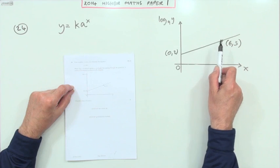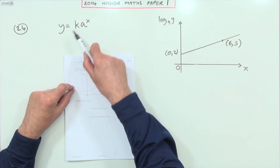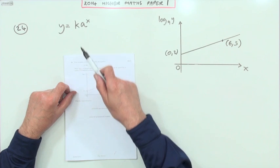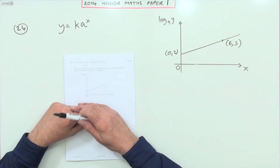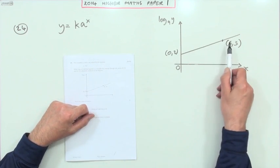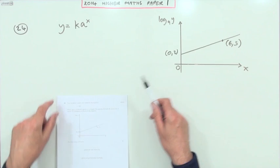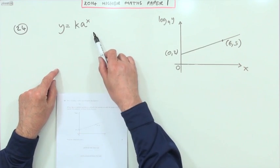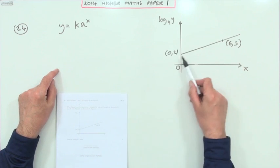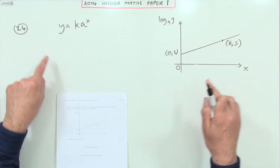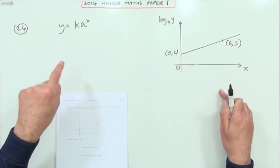Given these two points you could simply substitute those into that, get a pair of simultaneous equations and solve them. But the fact that there's a graph here suggests that you should solve it the other way, which is to rearrange this into a linear equation to compare it with that line and then equate the corresponding features of those.